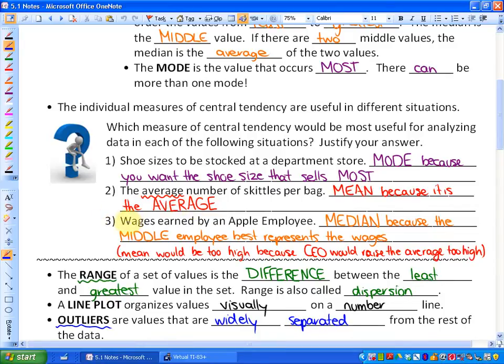And finally, thirdly, what would best analyze the wages earned by an Apple employee? My thinking is, we'll get into this later in a future lesson, is that this would be the median. So the middle employee would best analyze this data or represent the data, because the middle employee best represents the wages. Or in other words, why not the mean you might think? The mean would be too high because the CEO of Apple would raise the average too high. So for example, if you had 40 people making sixty thousand dollars and then the top dog, the CEO, makes four million dollars, the average would be raised to probably around two hundred thousand dollars or something like that, which doesn't really represent the wages earned by an Apple employee. The middle employee would represent that the best.